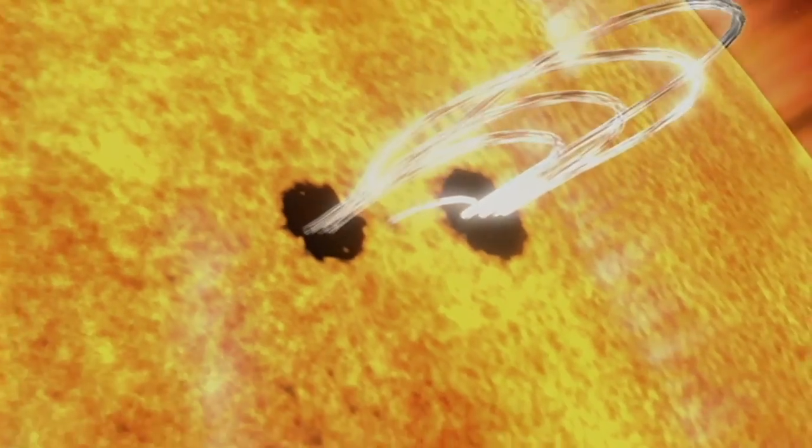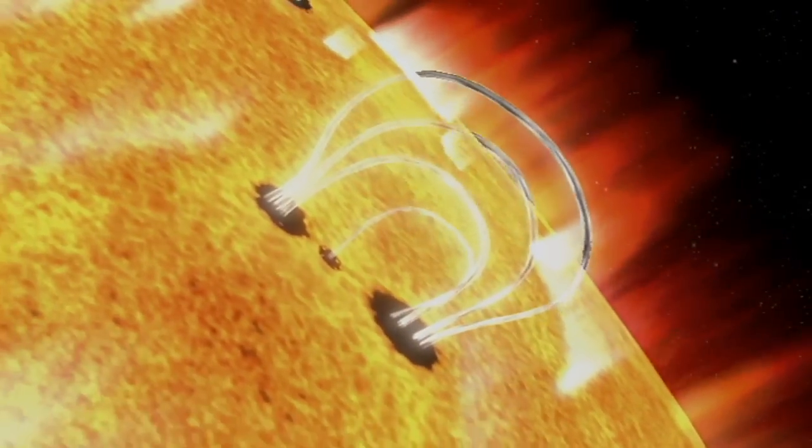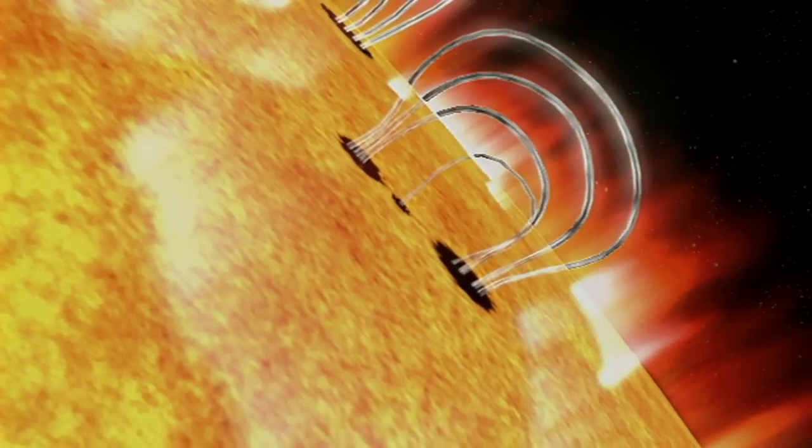Flares happen when the powerful magnetic fields in and around the Sun reconnect. They're usually associated with active regions, often seen as sunspots, where the magnetic fields are strongest.